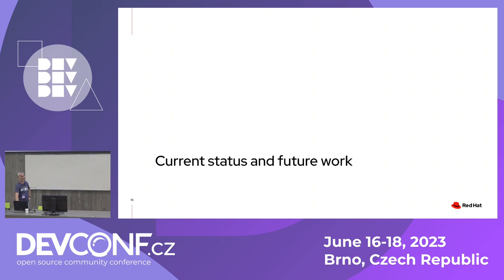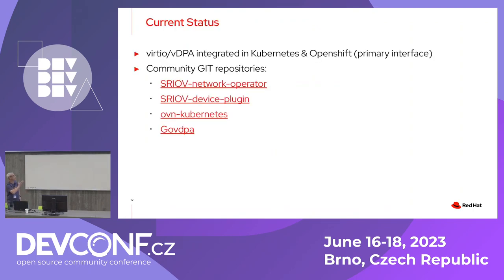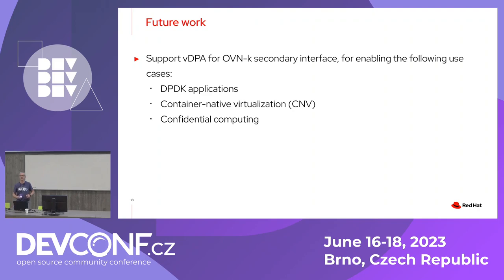The current status: we have implemented VDPA support on the primary interface in pods using OVN-Kubernetes. Relevant community repositories include the network operator, device plugin, Kubernetes, and govdpa — a Go library. Next steps in development are to support the secondary interface on the pod, enabling use cases like DPDK applications for user-space packet processing, container-native virtualization for running VM workloads alongside container workloads, and accelerated standard interfaces for confidential computing.